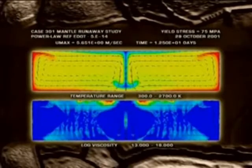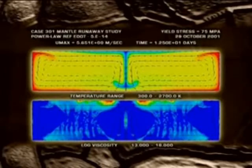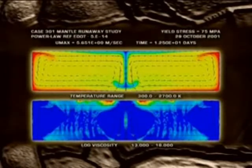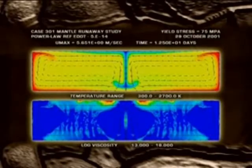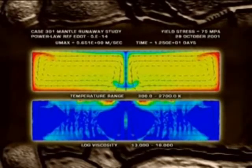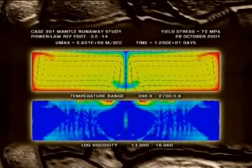So this is after 12 and a half days. The hot plumes are near the top. That cold material has started to run away, plunging to the bottom. Most of the region, as you see in the bottom panel, is blue, has become very weak. And so this whole volume has become weak and moving very rapidly.